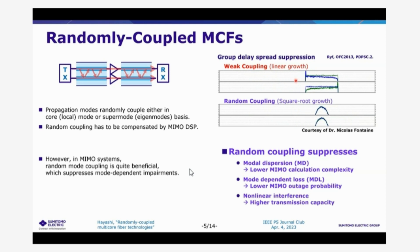So this is an example of group delay spread along the fiber propagation. And in the weakly coupled regime, the DGD, differential group delay, grows linearly along the fiber length. But in the randomly coupled regime, DGD grows with a square root proportion to the fiber length. So such a random coupling can suppress the accumulation of the mode dispersion.